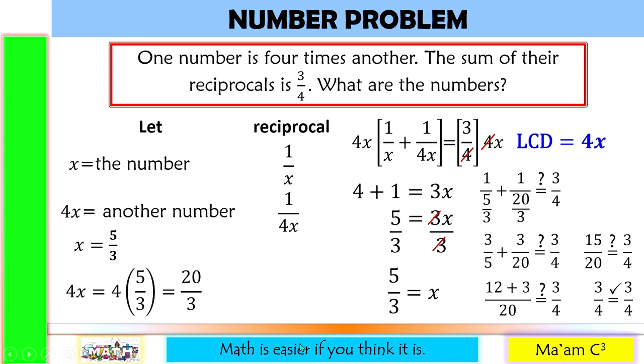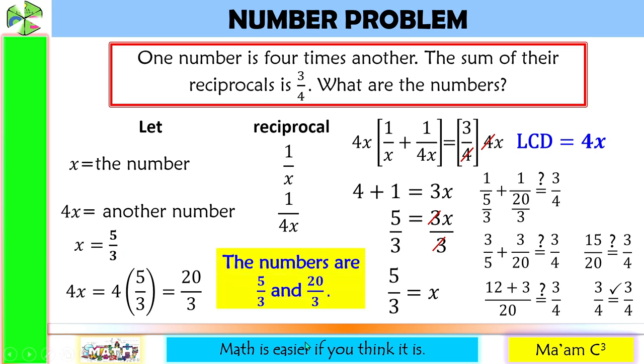Therefore, the numbers are 5 over 3 and 20 over 3.